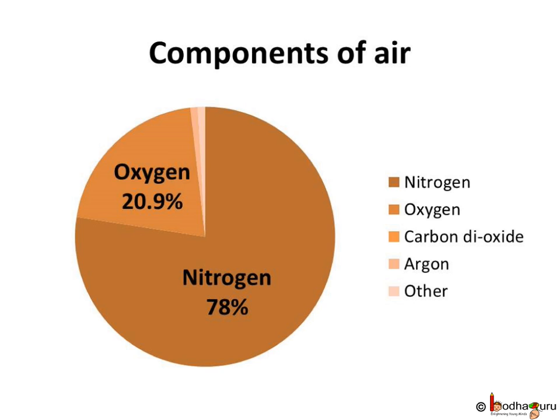You must have also seen a pie graph comparing the components of air. In air, there is around 78% nitrogen, 20.9% is oxygen, 0.03% is carbon dioxide, and the rest is other gases. We are comparing different components of air, which means we are comparing different parts of a whole. So a pie chart is ideal for this kind of comparison — that is, when a whole is divided into different parts.